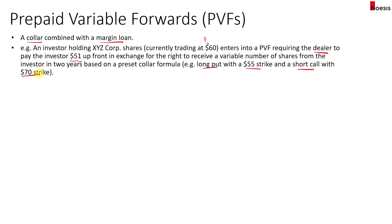Now, how it works: there is a loan. We start with a liability of negative $51. Then in two years, when the collar expires or the loan matures, the investor will have to pay back $55. This is the inherent loan assumption in the PVF.